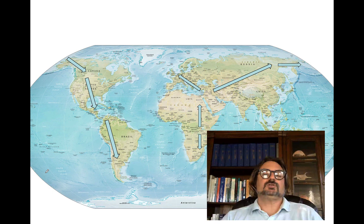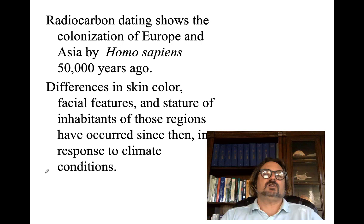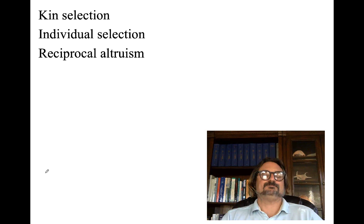Looking back at evolution, Kenneth Kidd at Yale said you can follow evolutionary arrows and see different densities of dopaminergic receptors representing the desire to find greener pastures. Radiocarbon dating shows the colonization of Europe and Asia by Homo sapiens 50,000 years ago — much more recent than we thought. Differences in skin color, facial features, and stature have occurred since then in response to climate conditions.